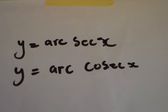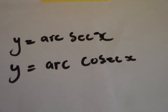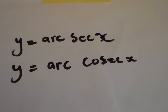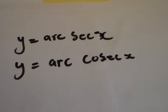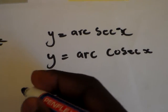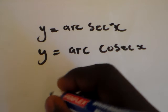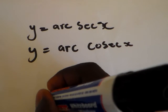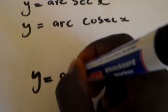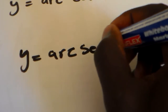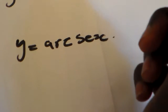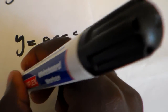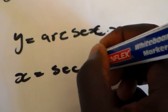Let's look again at inverse trigonometry — the derivative of y = arc sec x and y = arc cos x. Like we did in the previous video, if we want to derive y = arc sec x, we say y is equal to arc sec x. We're going to swap the values of x and y, so we'll have x is equal to arc sec y.